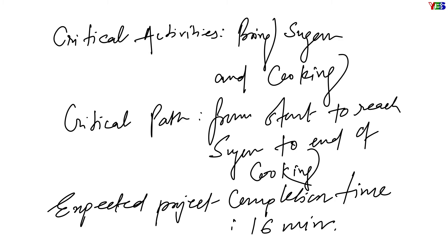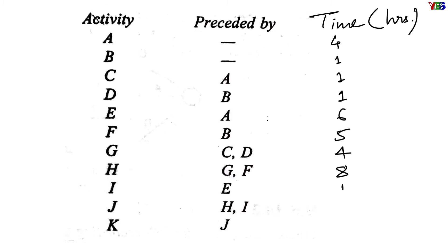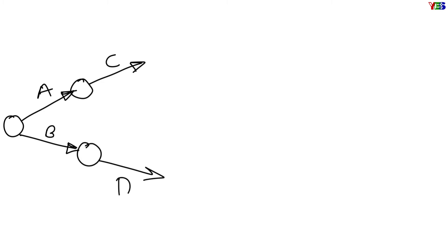Here 16 minutes is our expected project completion time. Now let's move to an industrial example. Here we have 11 activities to be done with different given times in hours to complete each activity. First, draw a circle for an event and make an arrow for activity A and another arrow for activity B. Since activity C will start after activity A, draw another event after activity A and draw an arrow for activity C. Similarly, draw activity D after activity B. Now we have activity E after activity A and activity F after activity B, so draw these activities similar to C and D.